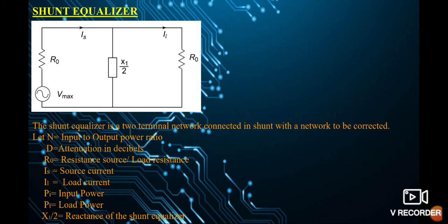Next is the shunt equalizer. The shunt equalizer is a two-terminal network connected in shunt with the network to be corrected. Here, N is the input-to-output power ratio, D is the attenuation in decibels, R0 is the source or load resistance, Is is the source current, IL is the load current, Pi is the input power, PL is the load power, and X1/2 is the reactance of the shunt equalizer.